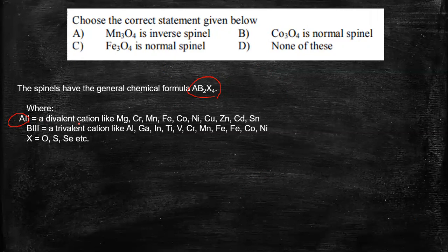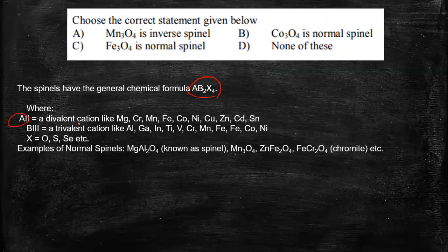So the spinel should have a general formula of AB2X4 and the common examples is MgAl2O4 and Mn3O4. Then we have ZnFe2O4, then FeCr2O4, etc. Now from here itself, it is clear that Mn3O4 is a normal spinel. So this first option is definitely not true. So let's cut this off.